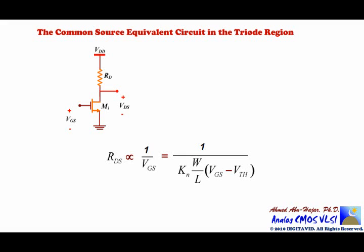We need to redraw the circuit by replacing the transistor with its equivalent circuit. We come to the transistor and replace it with its equivalent circuit. We said that this transistor behaves as a resistor from the drain-to-source in the triode region. Here is the drain, and from the drain-to-source we have RDS. The source is connected to ground.